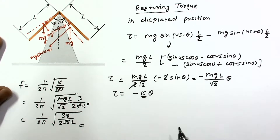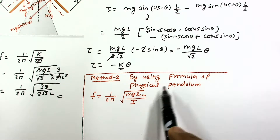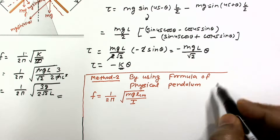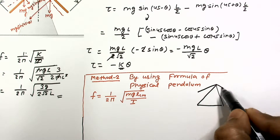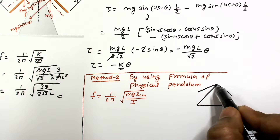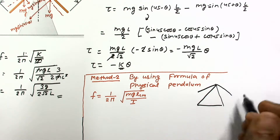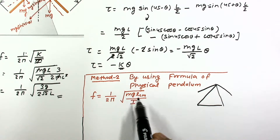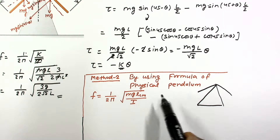We can also solve this using the standard formula for a physical pendulum. This system behaves like a physical pendulum since this point acts as a fixed hinge. The frequency formula for a physical pendulum is f = (1/2π)·√(mg·l_cm / I), where l_cm is the distance from the point of suspension to the center of mass of the system, and I is the moment of inertia about the point of suspension.